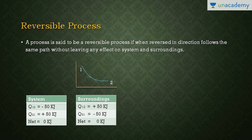There is no effect on the system or surroundings. Going from 1 to 2, heat is rejected from the system (minus 50 kJ) and added to the surroundings (plus 50 kJ). Going from 2 to 1, heat is added to the system (plus 50 kJ) and rejected from the surroundings (minus 50 kJ). The net is zero in both system and surroundings. Keep in mind: all reversible processes are shown by a continuous line, and all irreversible processes are shown by a discontinuous line.